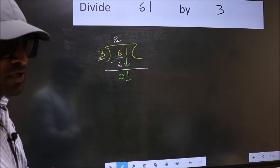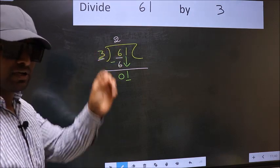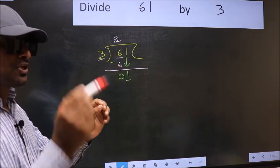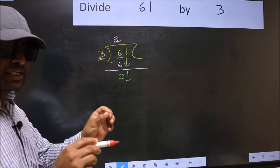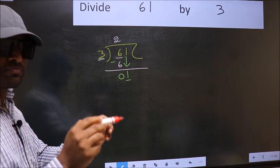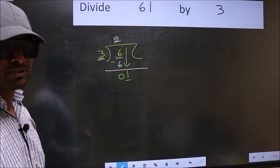Which is wrong. I repeat: bringing the number down and also putting a dot and taking 0, both in the same step, you are not supposed to do.